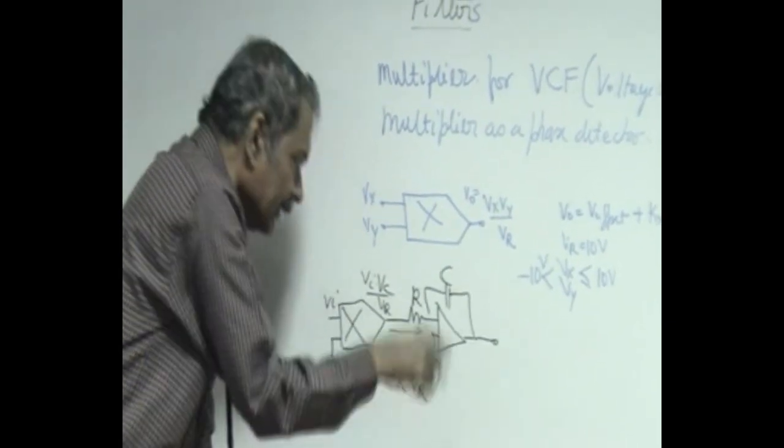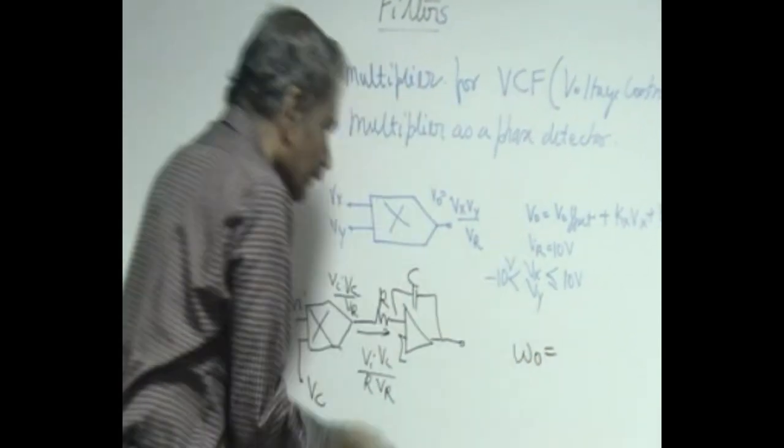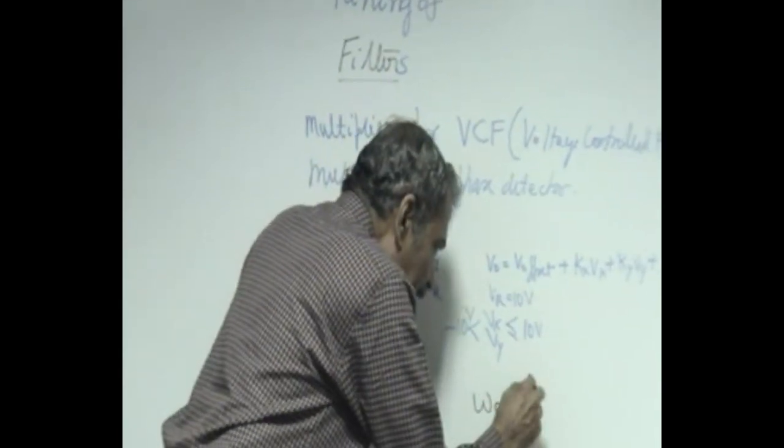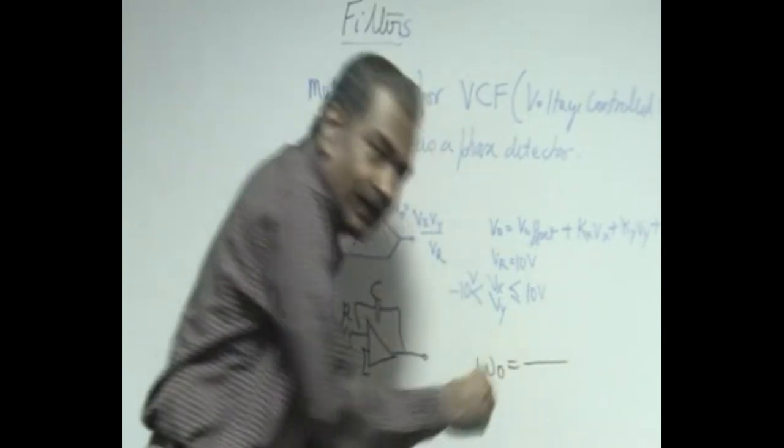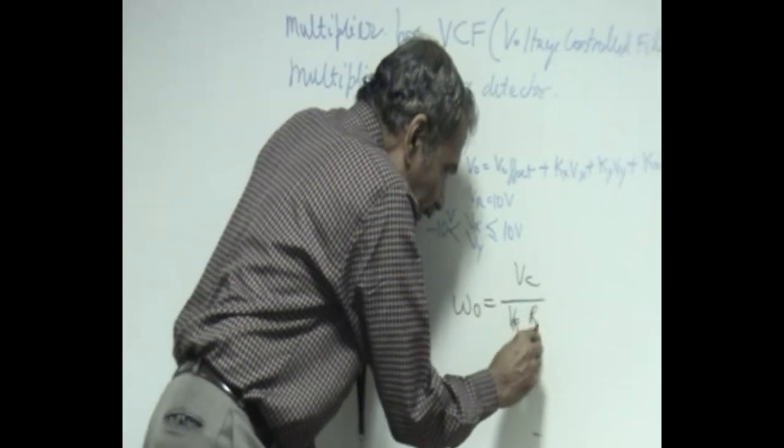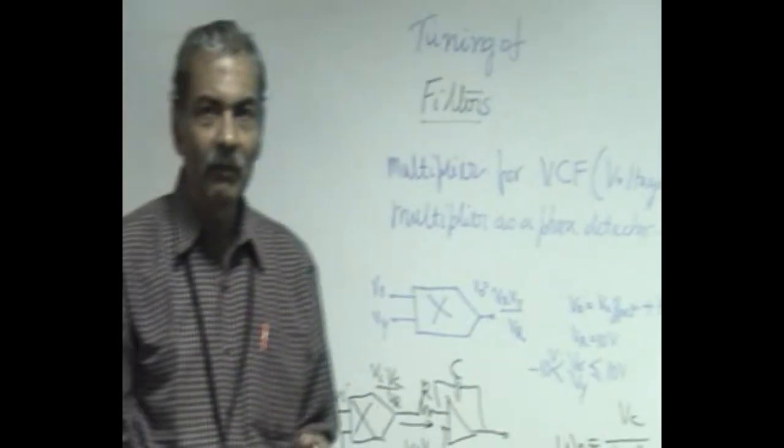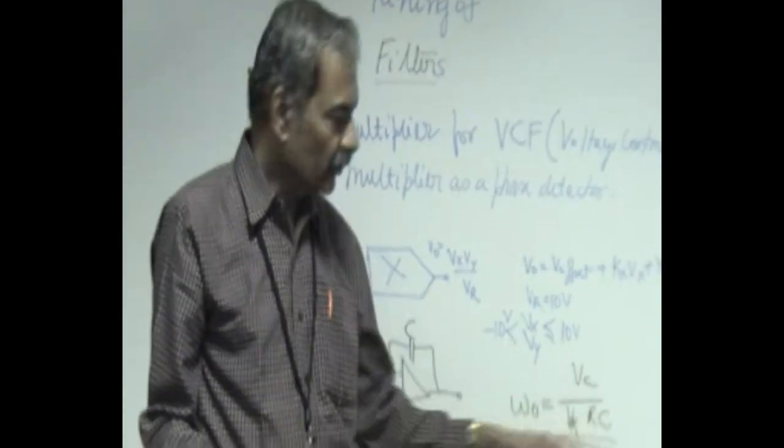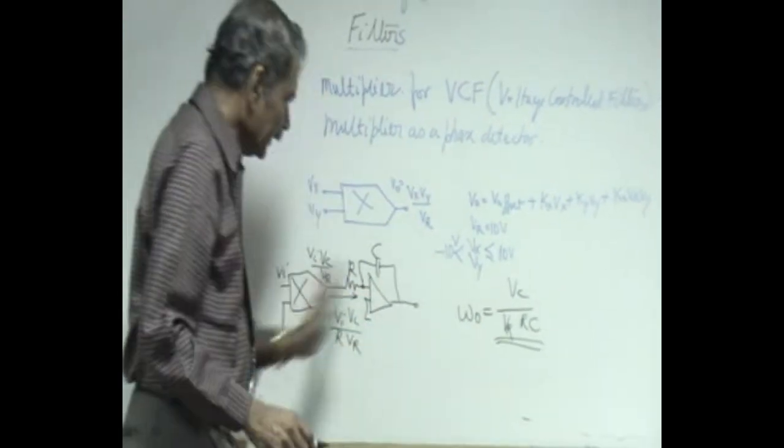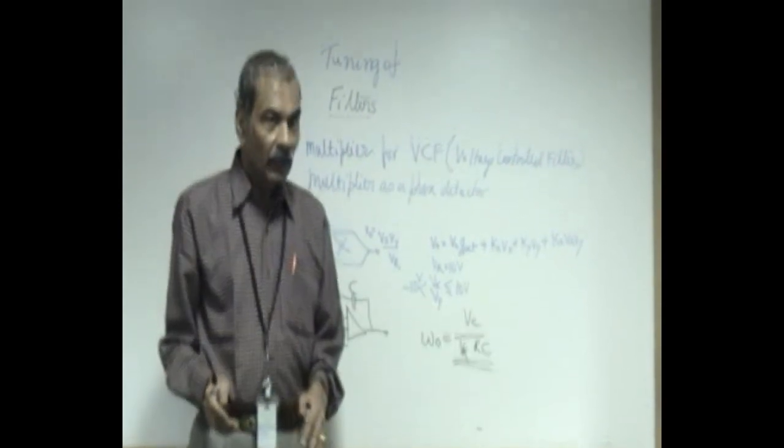So, we can replace in our previous design omega naught of the filter which uses the integrator by v_c by r times v_r. So, that means, the omega naught becomes directly proportional to the control voltage v_c. Q remains as such. That means, both integrators have their time constant voltage controlled by v_c by r times v_r.